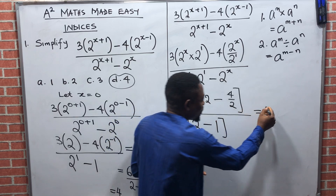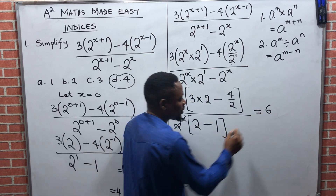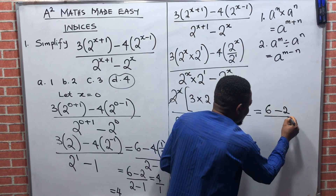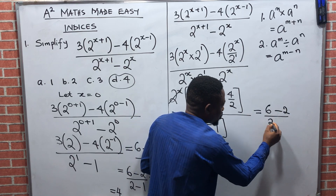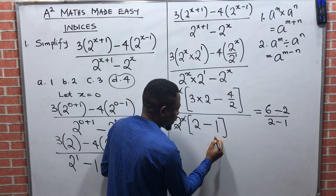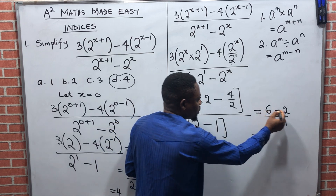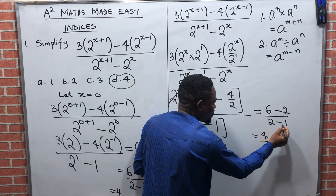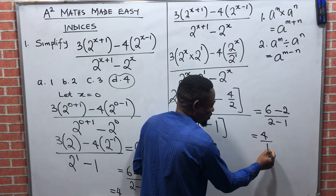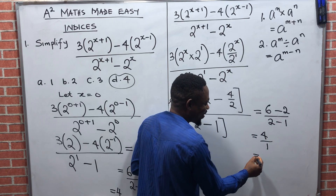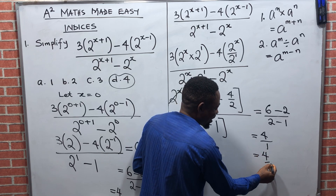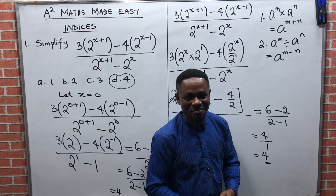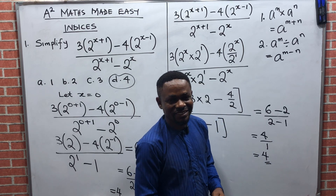Now: three times two gives six, then minus — two can go into four to give two. So we have six minus two, all over two minus one. That gives four over one, and four over one is four. You can see that this corresponds with the shortcut method. The answer is four, which is option D.